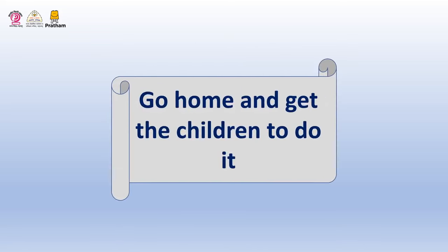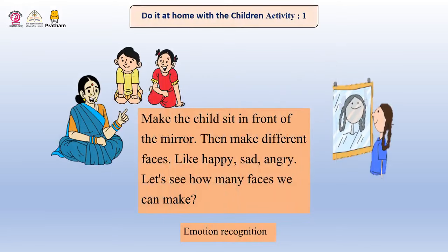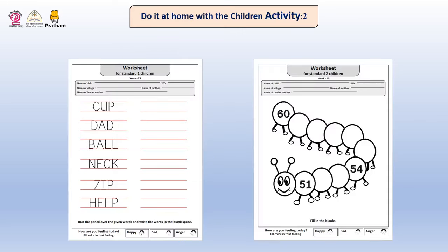Let us now do the next activity named 'Go Home and Get the Children to Do It.' Make the child sit in front of the mirror. Then make different faces like happy, sad, and angry. Let's see how many faces we can make. Along with this, write the words in the blank spaces by tracing the pencil over the given word for Class 1, and complete the fill-in-the-blanks worksheet for Class 2 with the children at home.